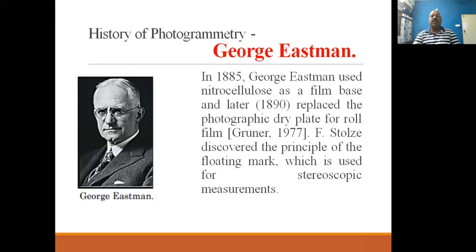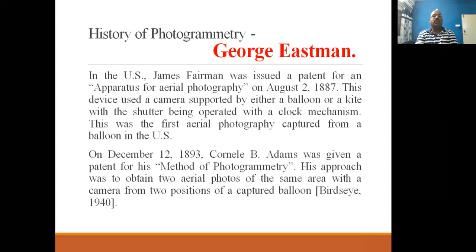In 1885, George Eastman used nitrocellulose as a film base and later replaced the photographic dry plate with roll film. In the US, James Feynman was issued a patent for an apparatus for aerial photography in 1887. This device used a camera supported by either a balloon or a kite, with the shutter being operated by a clock mechanism. This was the first aerial photography captured from a balloon in the US.